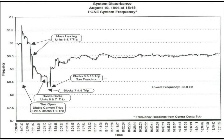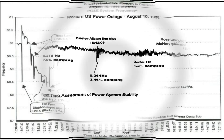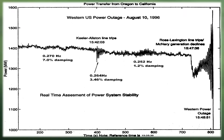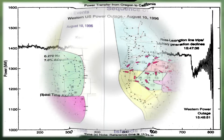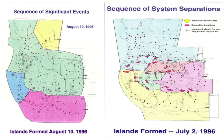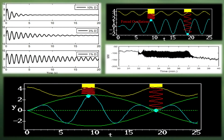The outage affected customers in seven western U.S. states, two Canadian provinces, and Baja California, Mexico. Approximately 7.5 million customers lost power for periods ranging from several minutes to six hours. The outage stretched from Canada to New Mexico and knocked out power to four million customers amid a triple-digit heat wave. High load and demand, coupled with inadequate tree trimming practices, improper system operation, and out-of-service equipment, contributed to the severity of the disturbance. The blackout raised concerns about recent debates about deregulating electricity utilities.